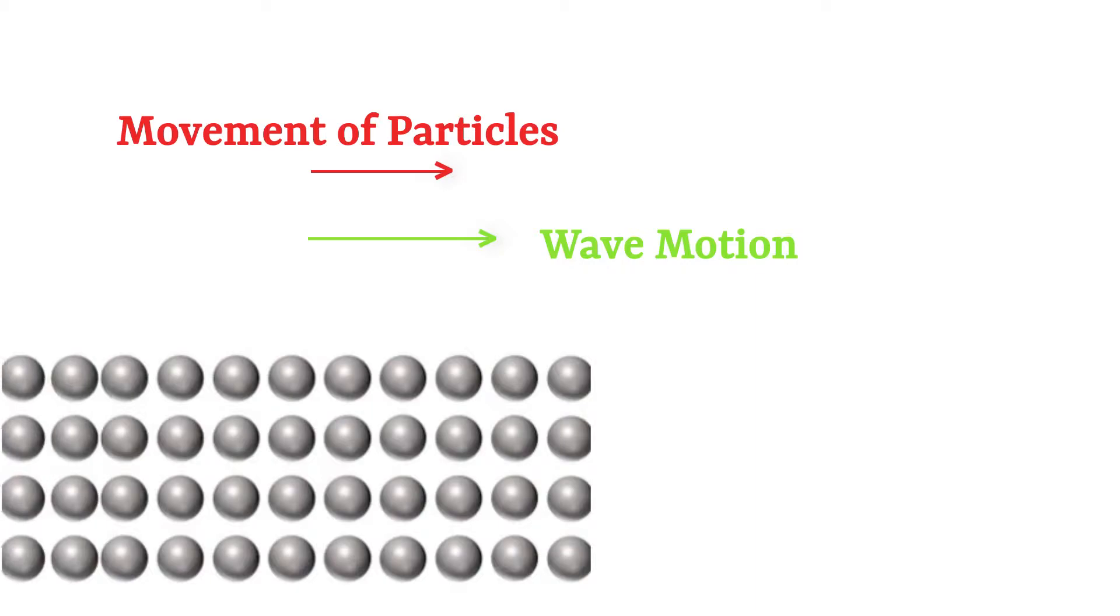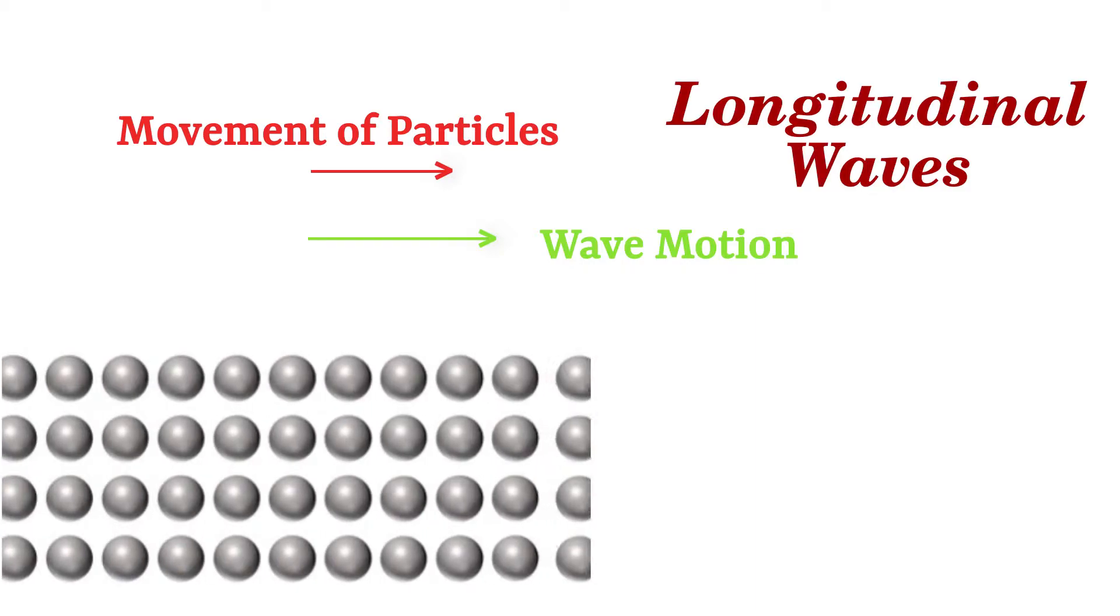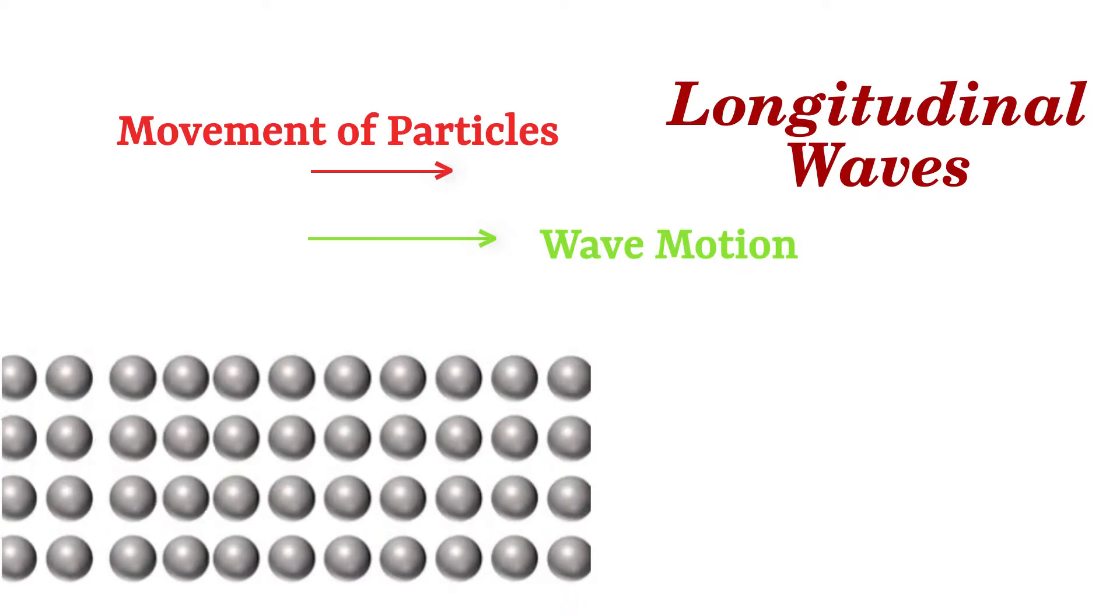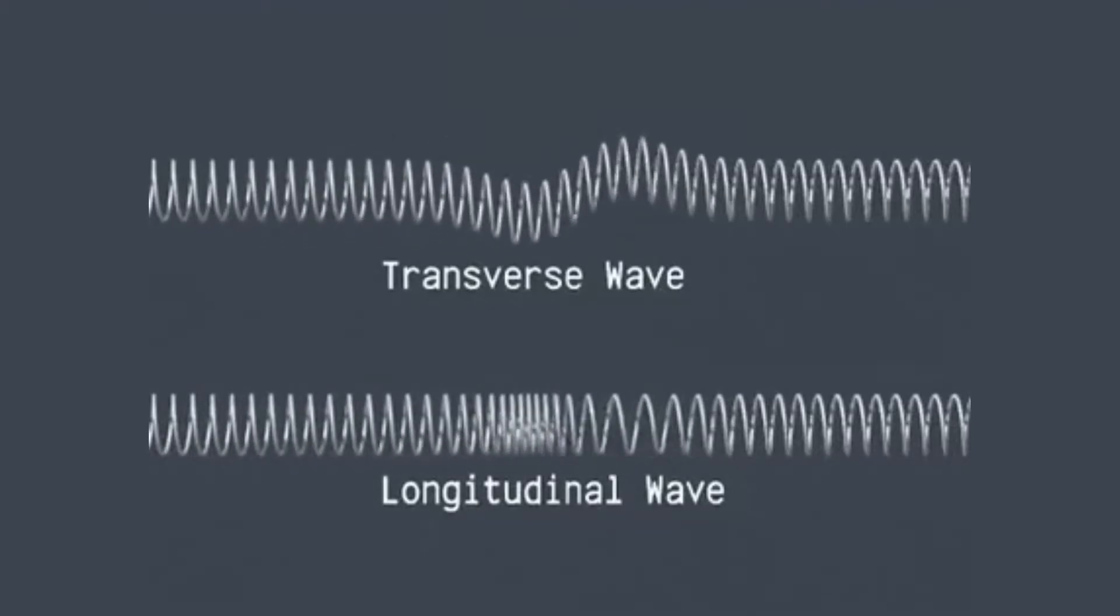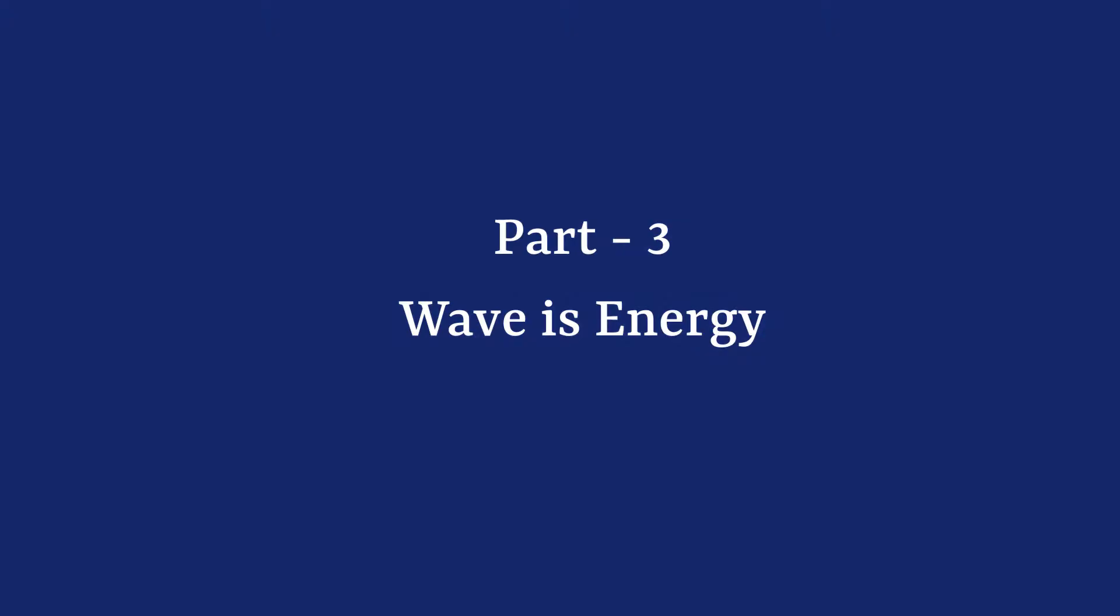There are waves in which particles move in the same direction as the wave. Such waves are called longitudinal waves. Compression and rarefactions in a spring is an example of a longitudinal wave.